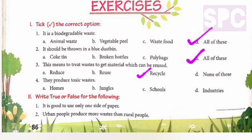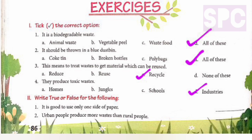Recycling means to treat waste materials in such a way that we get a material which can be reused. Part four - Who produces toxic waste products? Options: homes, jungles, schools, industries. The answer is option D - industries. A lot of chemicals are used in industries for manufacturing different kinds of materials, and these chemicals are toxic and hazardous to our environment.